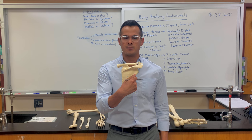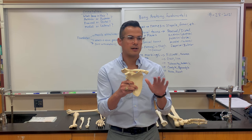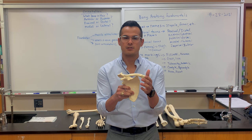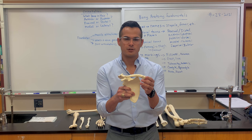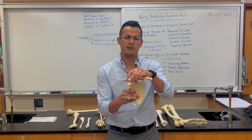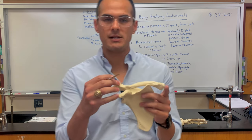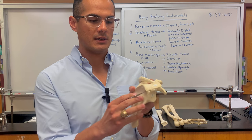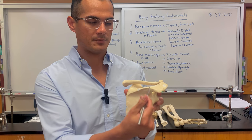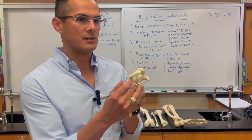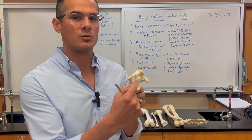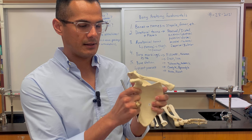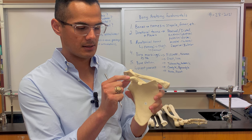This would be a posterior view of the scapula. The bone found here is the clavicle — this is the sternal end, which articulates with the sternum, and then this is the acromial end of the clavicle. Looking at it from a lateral view, this is the acromion. On the posterior side, this is the spine of the scapula. From a lateral point of view, this is the glenoid fossa — an impression where the head of the humerus articulates, forming a ball and socket joint. And this is the coracoid process.